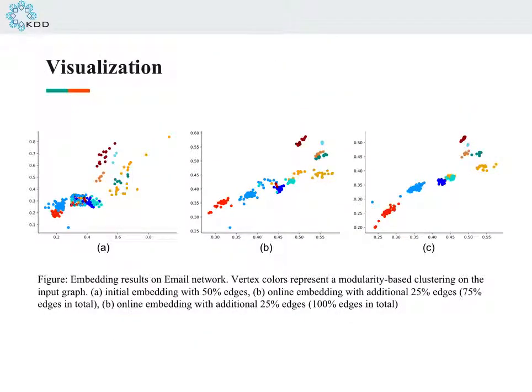And this is the dynamic embedding results. Figure A shows the initial embedding with 50% edges. Figure B and C show the online embedding results with additional edges. The network representations learned by our model can